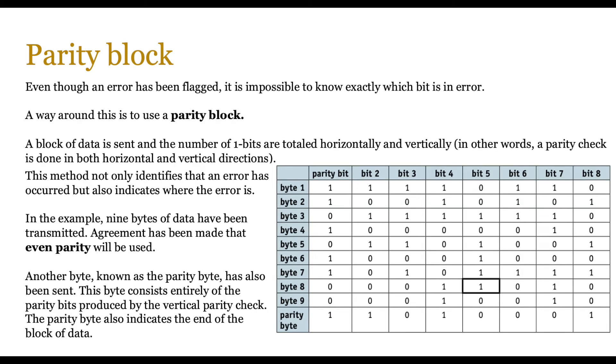Even though an error has been flagged using parity bit checks, it's impossible to know exactly which bit is in error. A way around this is to use a parity block.